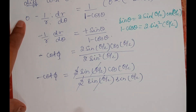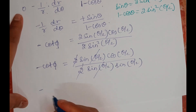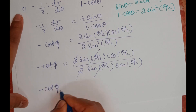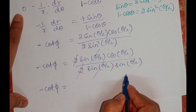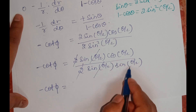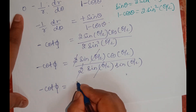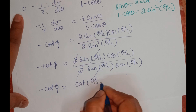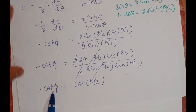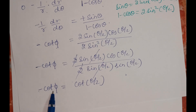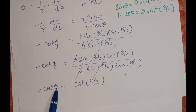The sin(θ/2) terms get cancelled. So I can write this as -cot φ = cos(θ/2)/sin(θ/2), which is cot(θ/2). So -cot φ = cot(θ/2).